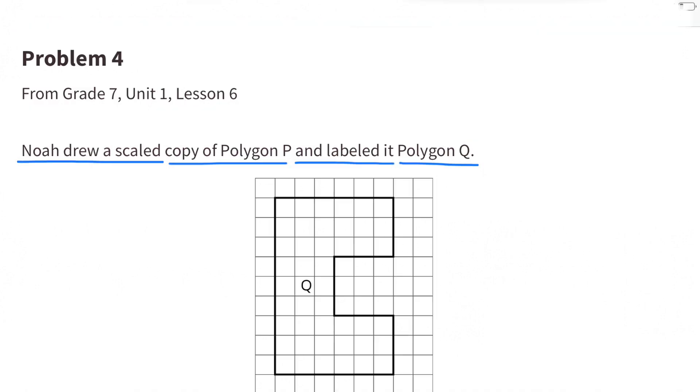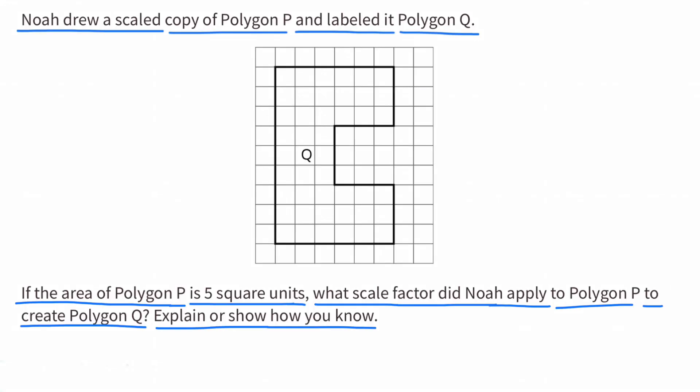Number 4. Noah drew a scaled copy of Polygon P and labeled it Polygon Q. If the area of Polygon P is 5 square units, what scale factor did Noah apply to Polygon P to create Polygon Q? Explain or show how you know.